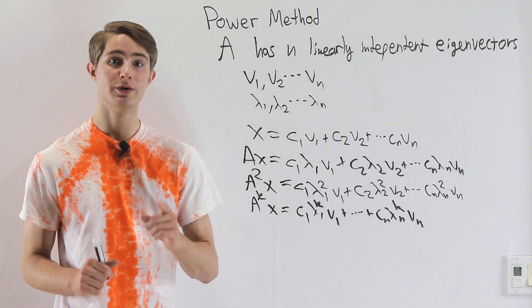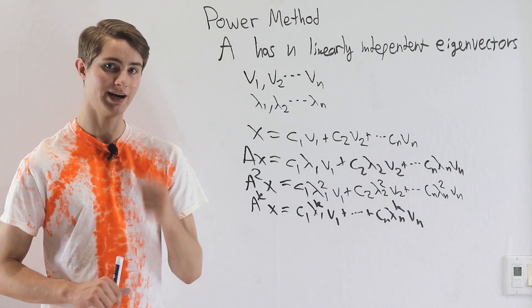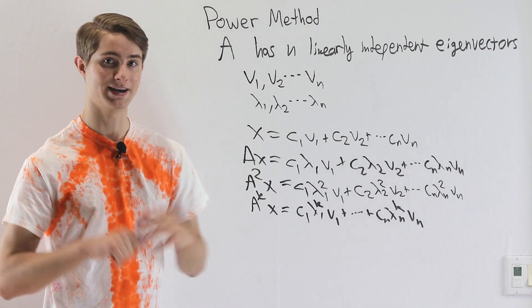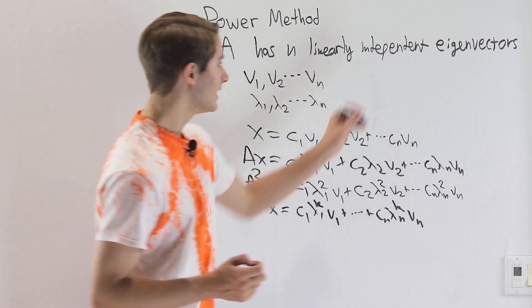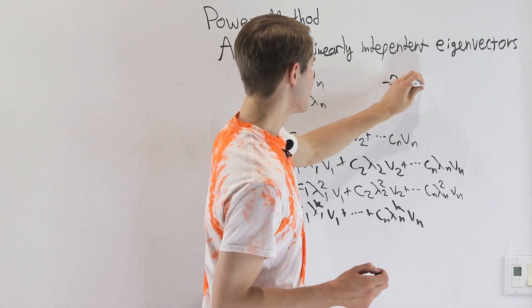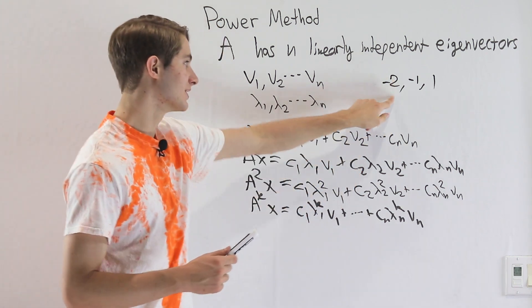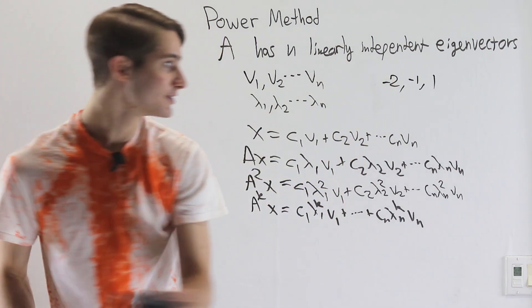Now once we get to this point, we're going to look at something called the dominant eigenvalue, which just means the eigenvalue that has the biggest magnitude. So for example, if the eigenvalues were negative 2, negative 1, and 1, negative 2 is the dominant eigenvalue because it's the biggest one out of all three numbers.